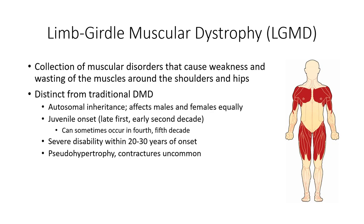Another notable difference is in inheritance patterns. While traditional Duchenne muscular dystrophy is exclusive to male patients, there are equal numbers of males and females affected in this new class of diseases, suggesting an autosomal inheritance pattern. Further investigation demonstrated both autosomal dominant and autosomal recessive inheritance patterns, depending on the specific gene mutation.